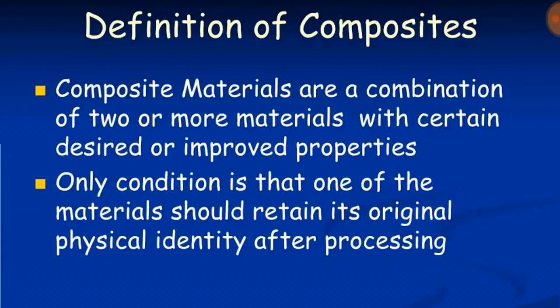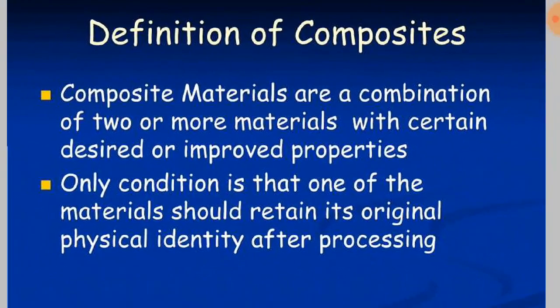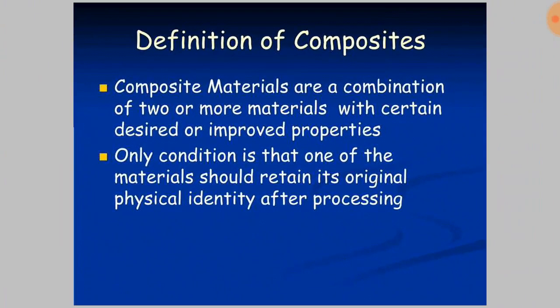Composite is a material that is a combination of two or more materials with certain desired or improved properties such as strength, rigidity, stiffness, etc. The only condition is that one of the materials should retain its original physical identity after processing. The composite is considered a key material for future advanced research and development.